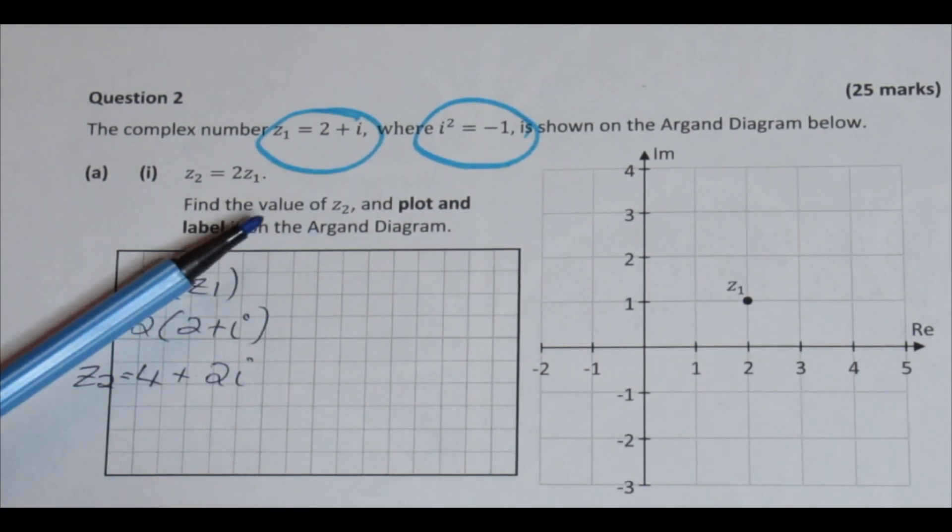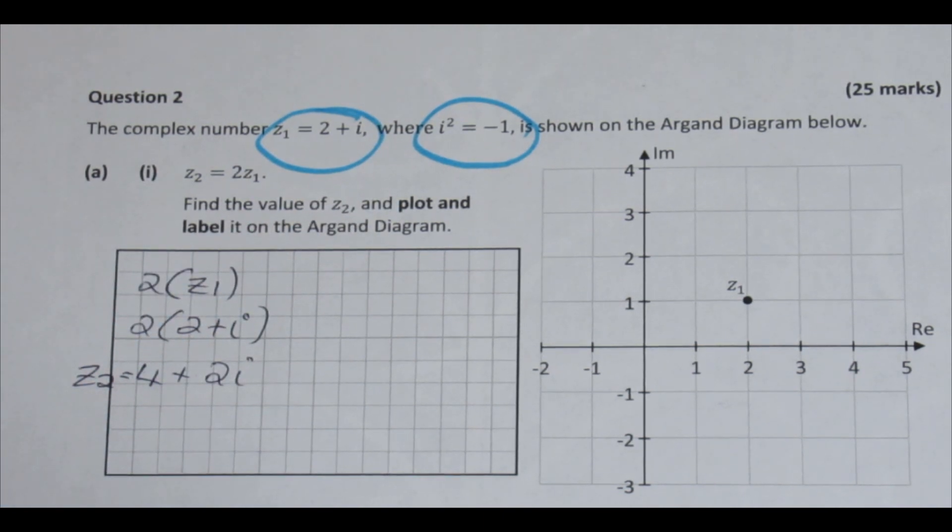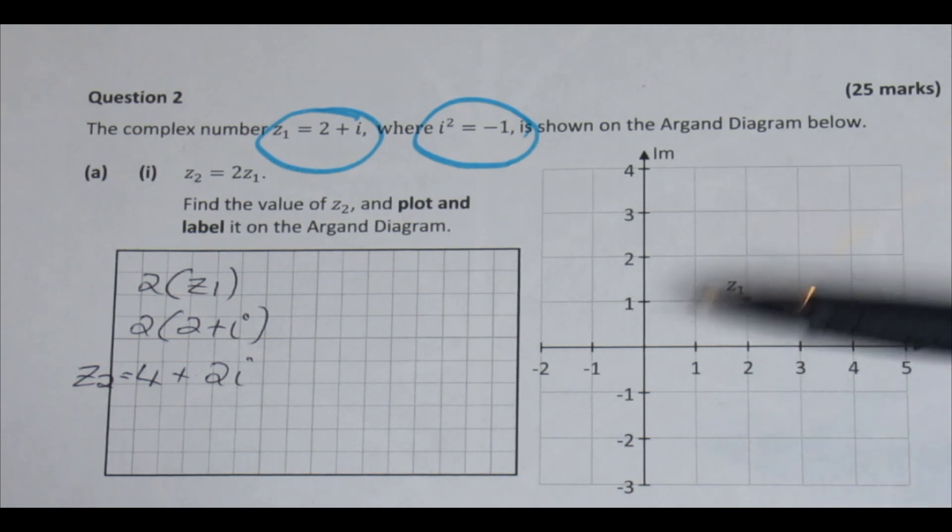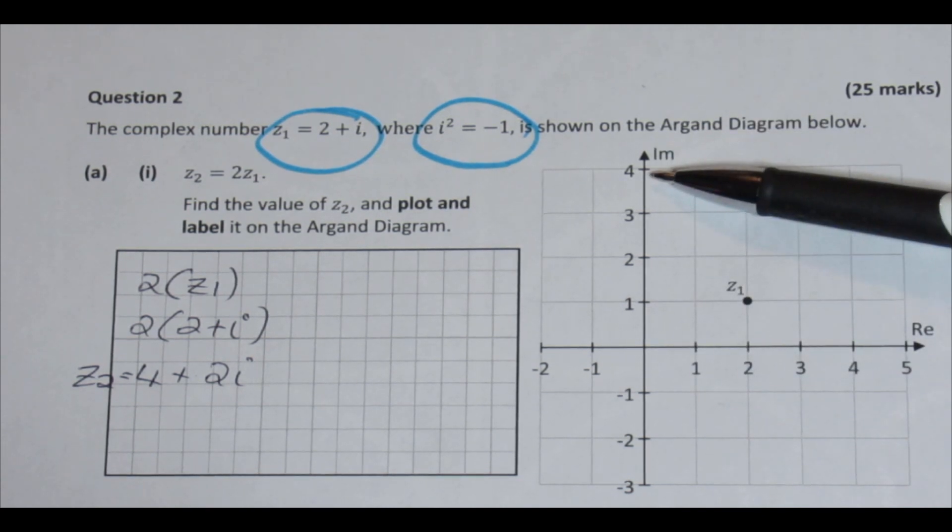Second part of the question then, it says find Z2, which we have done, and plot and label it on the Argand diagram. So looking at our Argand diagram here. What we would know as our x-axis, we now call the real axis. And what we'd have known as our y-axis, we call the imaginary axis.